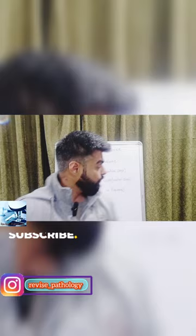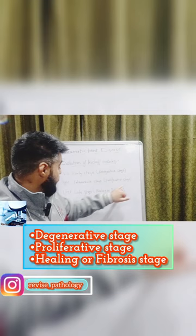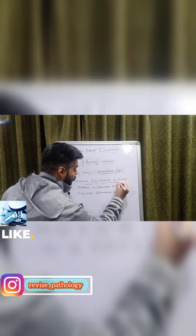They have been formed in three stages: early stage, which is called the degenerative stage; intermediate stage, which is called the proliferative stage; and late stage, which is the healing or fibrosis stage. In the early stage, that is the degenerative stage, it occurs only by one to four weeks of the illness, then edema in the connective tissue occurs and fibrinoid degeneration occurs.